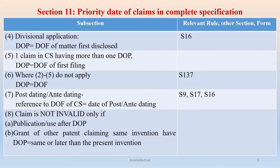Subsection 5: in any of the other subsections — 1, 2, 3, 3a, and 4 — if any claim of the complete specification has two or more priority dates, then the priority date of that claim will be the earlier or earliest of those dates.